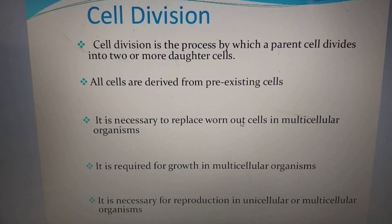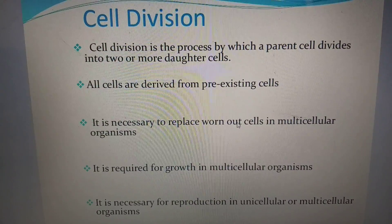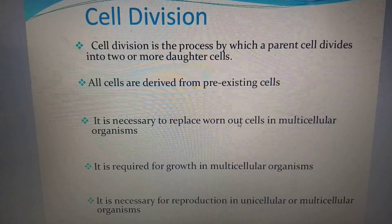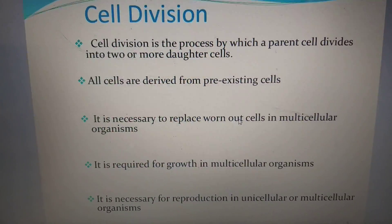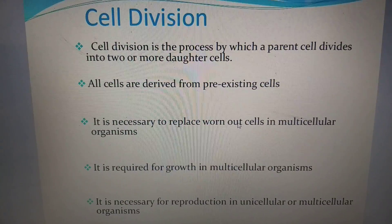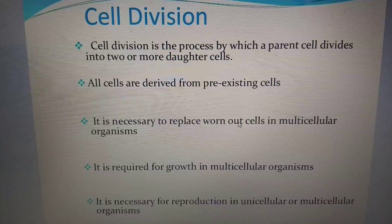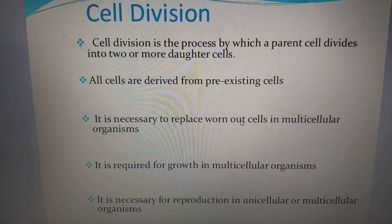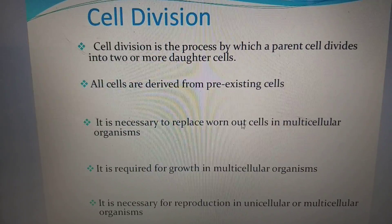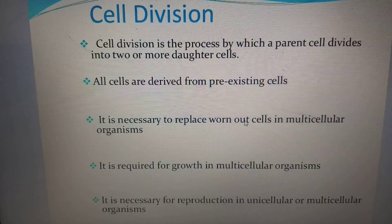Cell division is the process by which a parent cell divides into two or more daughter cells. All cells are derived from pre-existing cells — a statement given by Rudolf Virchow, who completed the cell theory. Cell division is necessary to replace worn-off cells in multicellular organisms, required for growth, and necessary for reproduction in unicellular and multicellular organisms. For all these things we need cell division, either mitosis or meiosis.